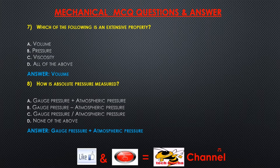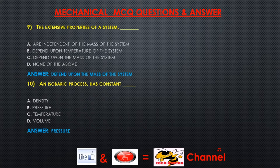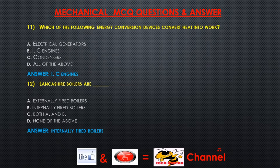Question 8: How is absolute pressure measured? A) gauge pressure plus atmospheric pressure, B) gauge pressure minus atmospheric pressure, C) gauge pressure times atmospheric pressure, D) none of the above. Answer: Gauge pressure plus atmospheric pressure. Question 9: The extensive properties of a system — A) are independent of the mass of the system, B) depend upon the temperature of the system, C) depend upon the mass of the system, D) none of the above. Answer: Depend upon the mass of the system.